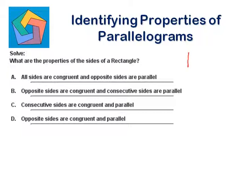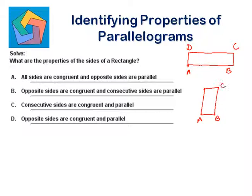A rectangle is shaped like this. Suppose ABCD, or a vertical rectangle, is shaped like this. In a rectangle, opposite sides are congruent, and all angles are equal to 90 degrees. These are the properties of a rectangle.